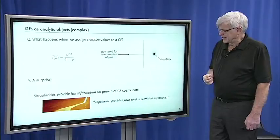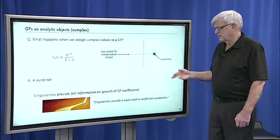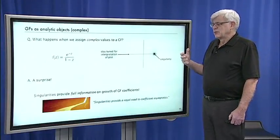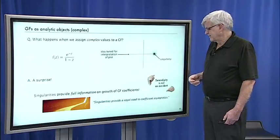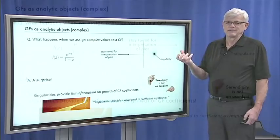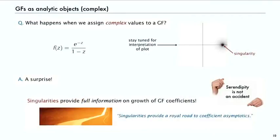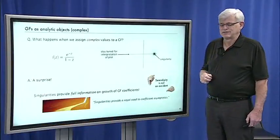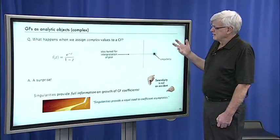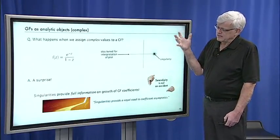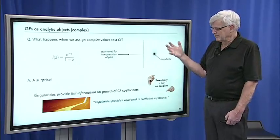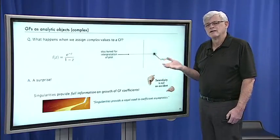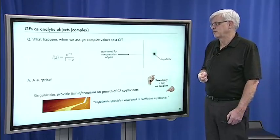As Philippe says, singularities provide a royal road to coefficient asymptotics. There's no real reason why this should be the case — it's serendipitous. We have this thing that looks like a function, we treat it like a function on the complex plane, and our coefficients were supposed to be counting things. Yet the analytic point of view provides a mechanism where we can gain full understanding of the counting problems we started with, even though at the start we were working with generating functions just as formal objects.